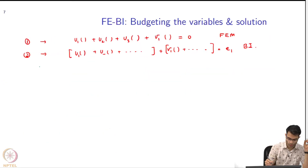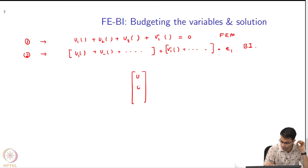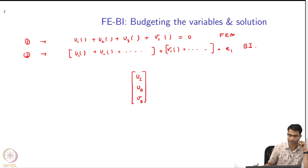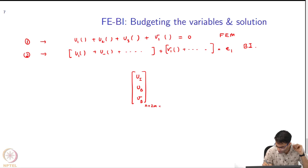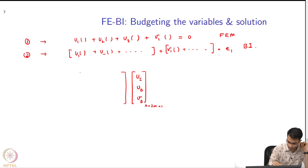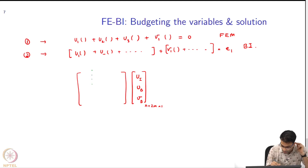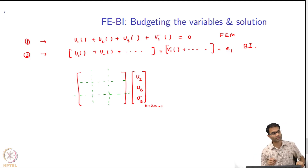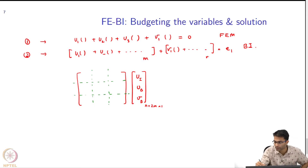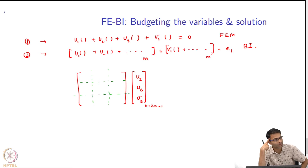Now when I combine all of these together, what are the overall unknowns? Unknowns are going to be: u in the interior, u on the boundary, and v on the boundary. These are my unknowns — that is n plus 2m cross 1. I am going to partition this into 3 parts. The FEM equations have m and m: the first being u's which are H_tan, and the next are v's which are E_z.